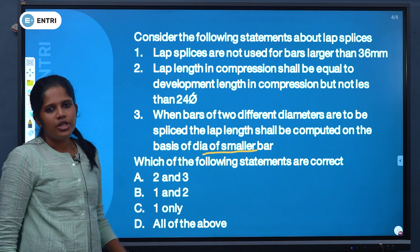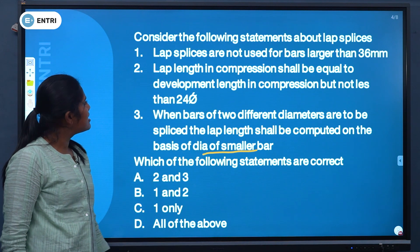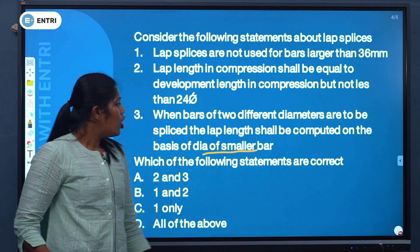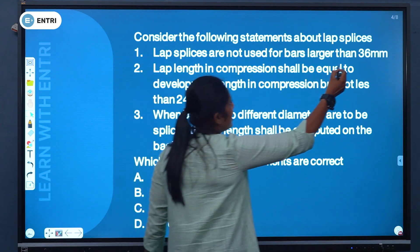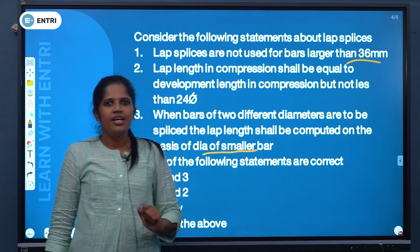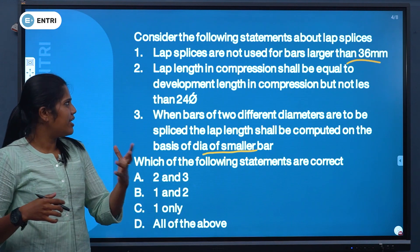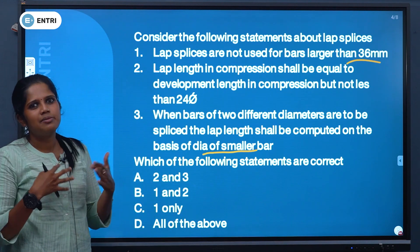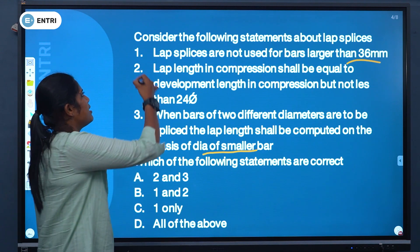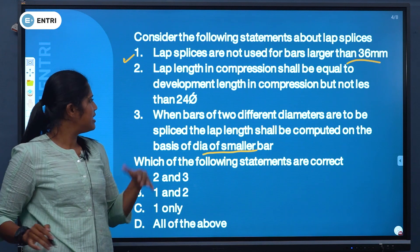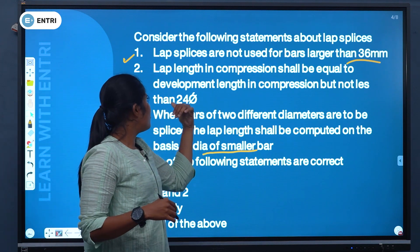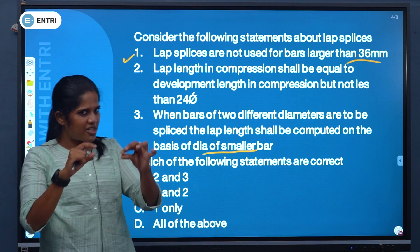Let's analyze: Lap splices are not used for bars larger than 36 mm — first statement is obviously correct. Second: lap length in compression shall be equal to development length in compression — that is also correct.